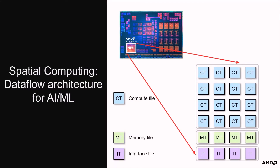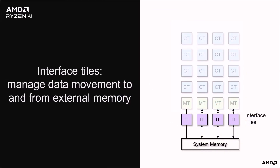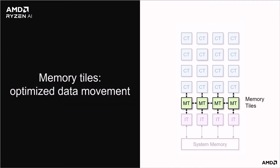The Ryzen AI NPU data flow architecture consists of an array of interconnected compute, memory and interface tiles. The array is optimized for machine learning workloads. The processing tasks are distributed across the array of compute tiles, a concept often referred to as spatial computing. The interface tiles manage movement of data into and out of the array. Input and output data is streamed between the NPU and system memory via the interface tiles. The memory tiles consist of data memory and multiple specialized data movers, ensuring data is moved efficiently within the array, which is critical for overall performance. Memory tiles are used to buffer and reorganize input data in different patterns before streaming it to the compute nodes, and can also collect results from the compute tiles for streaming back to the interface tiles and out of the array.